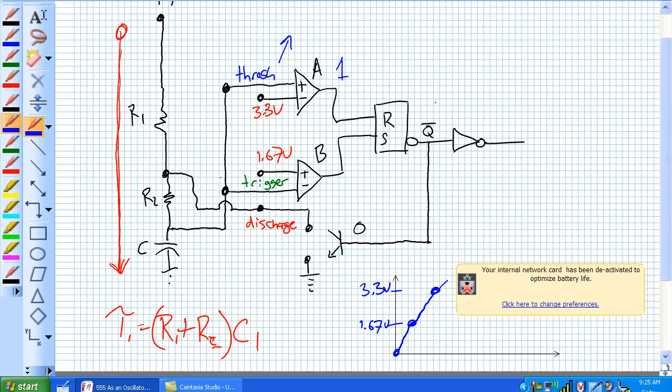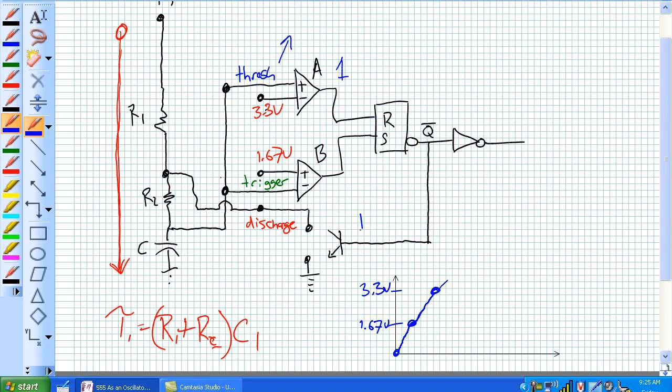So, when Q is 0, not Q becomes a 1, and it turns the discharge transistor on. Once the discharge transistor is on, you could easily replace this open circuit with a short circuit. Now, what happens? Well, current ceases to flow in this direction because now there's an easy path to ground for the capacitor to discharge through one resistor only to ground.